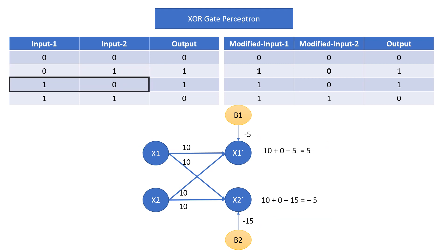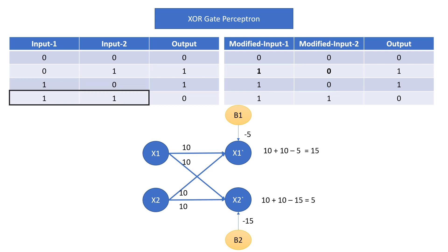For input (1,0): from x1 we get 10, plus zero from x2, minus 5 gives summation 5, so x1-dash is 1. For x2-dash, from x1 we get 0 added to zero, minus 15 gives minus 5, so x2-dash is 0. For input (1,1): 1 times 10 plus 1 times 10 minus 15 gives 5, so x1-dash is 1; 1 times 10 plus 1 times 10 minus 15 is 5, giving x2-dash as 1. So we have successfully achieved modification of all inputs.